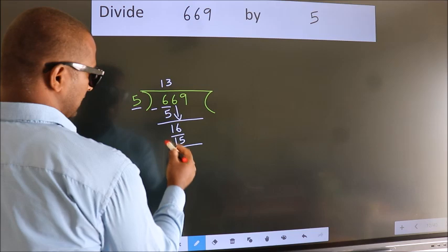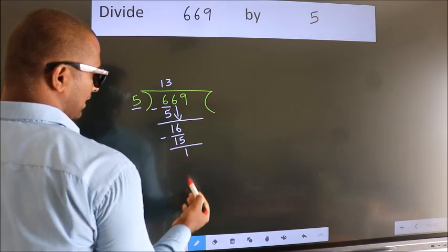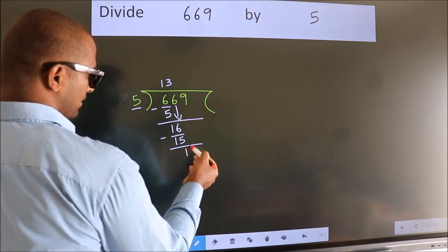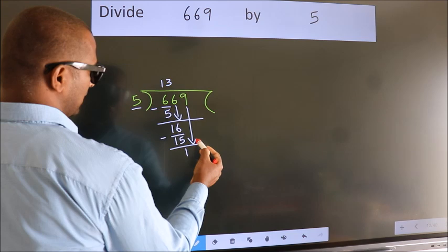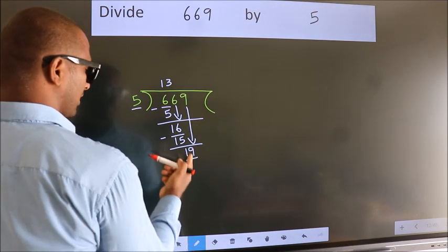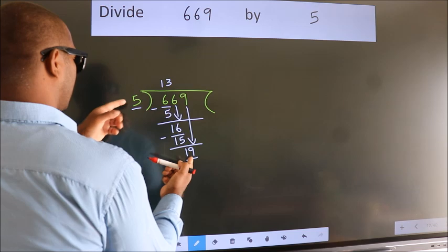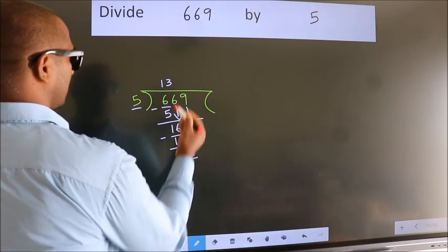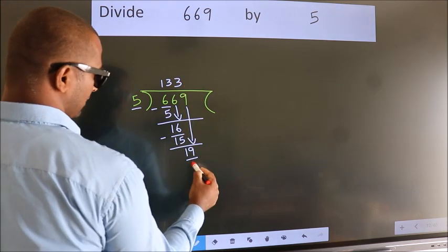Now we subtract. We get 1. After this bring down the beside number. So 9 down. So 19. A number close to 19 in 5 table is 5 3s 15.